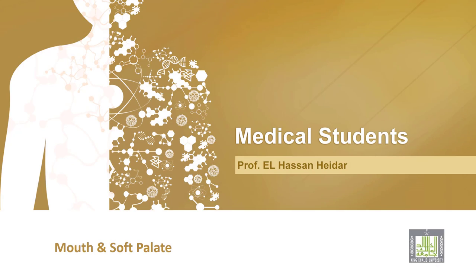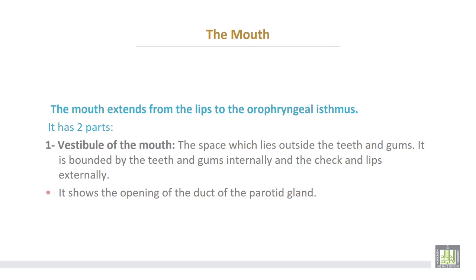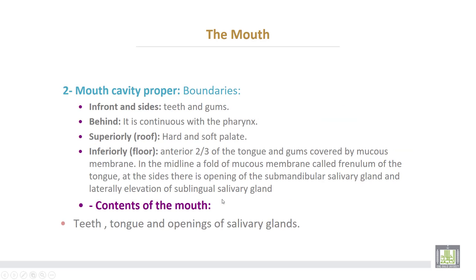Mouth and soft palate. The mouth extends from the lips to the oropharynx and has two parts. The first is the vestibule of the mouth — the space which lies outside the teeth and gums. It is bounded by the teeth and gums internally and the cheeks and lips externally. It shows the opening of the duct of the parotid gland.